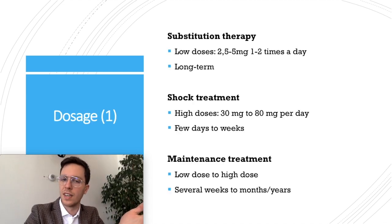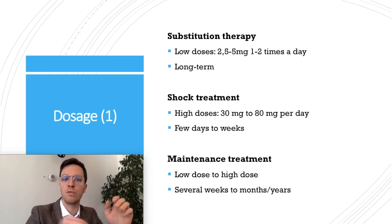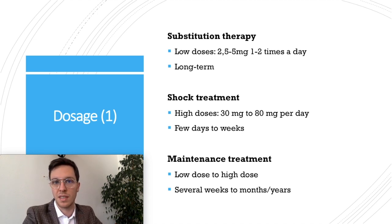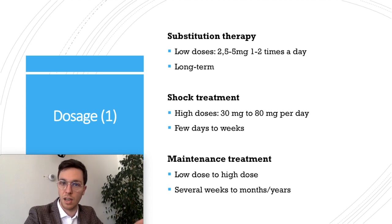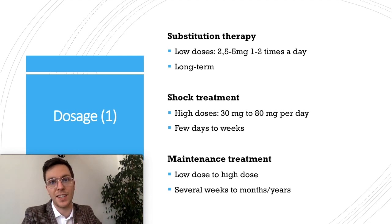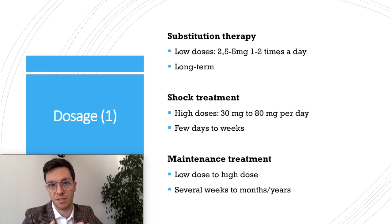What dose of prednisone would be the correct one? This depends on your treatment type. There are three kinds of treatments. First, substitution therapy, suitable for people who do not make their body's own prednisone — you take low doses of 2.5 to 5mg, once or twice a day, long term. Second, shock or acute treatment for strong inflammation reactions like an asthma or COPD attack — higher doses of 30 to 80mg or more per day, divided over one to four doses, for a few days to a few weeks. Third, maintenance treatment, where the dose can vary from low to high and you take it for several weeks to months or even years.